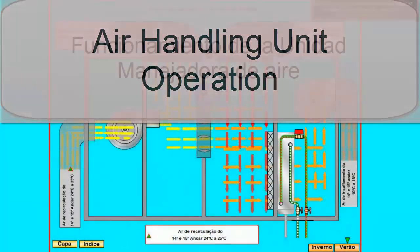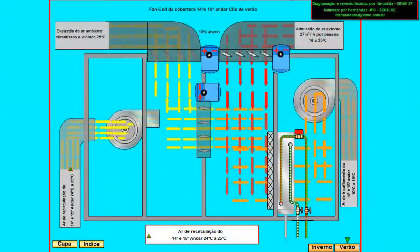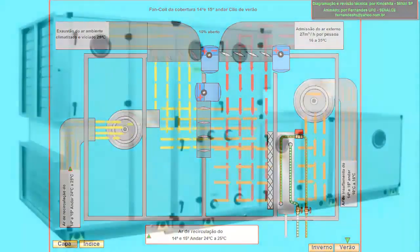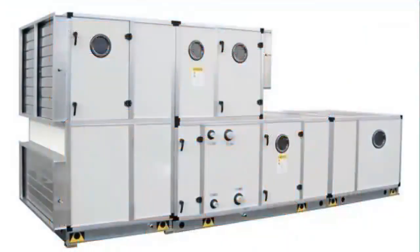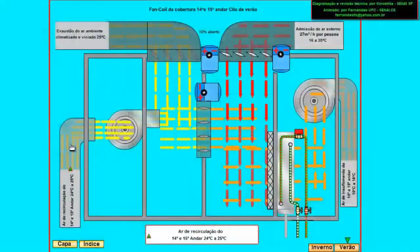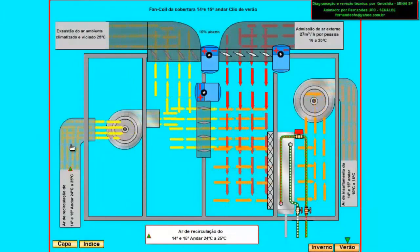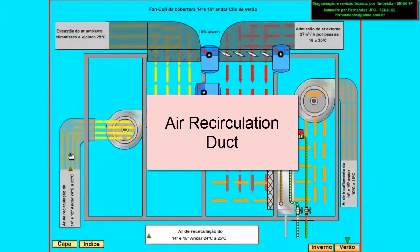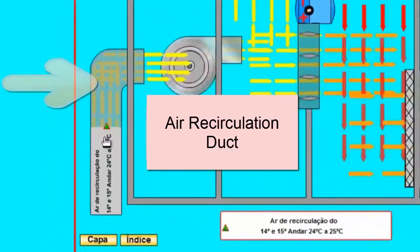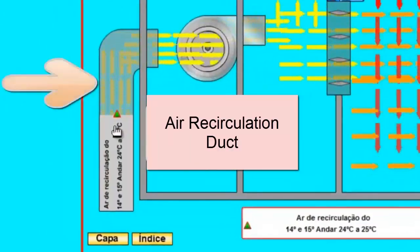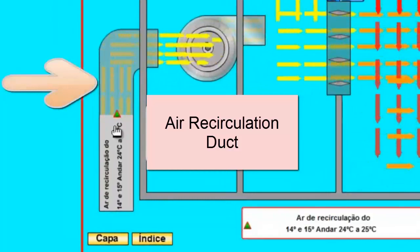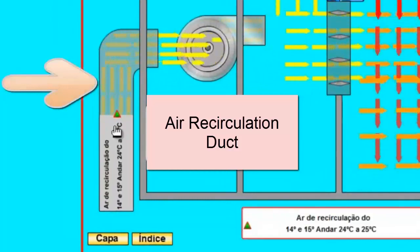On the screen we have an animation that allows us to understand the operation of a fan coil system and air handling unit. To understand how it works, we are going to show its basic parts and the function that they are performing at that moment.